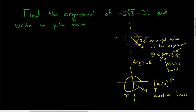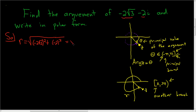Let's go ahead and work it out. We're asked to find the argument and write in polar form. The first thing we do is compute the modulus — that's the square root of the real part squared plus the imaginary part squared. So squaring the real part: negative 2 square root of 3 squared, plus negative 2 squared. That gives us the square root of 4 times 3 plus 4, which is the square root of 12 plus 4 = 16. So the modulus r equals 4.